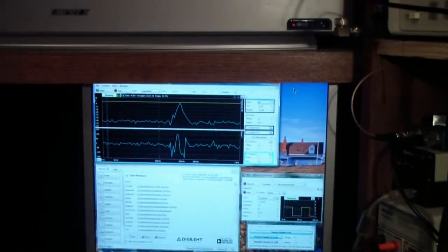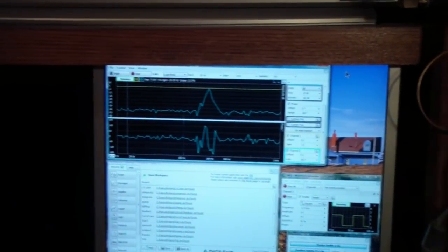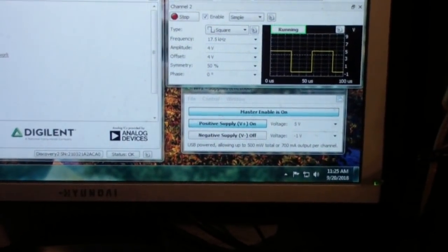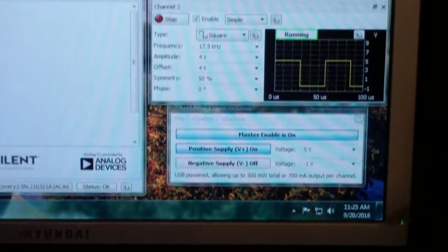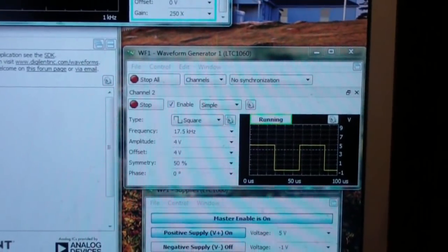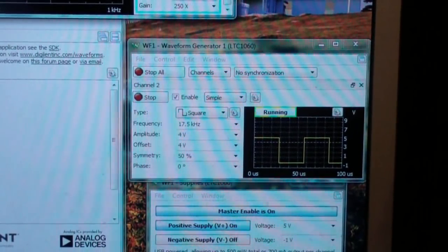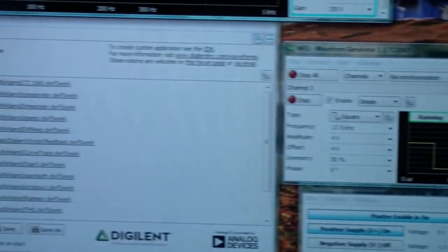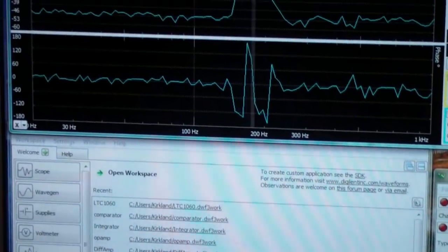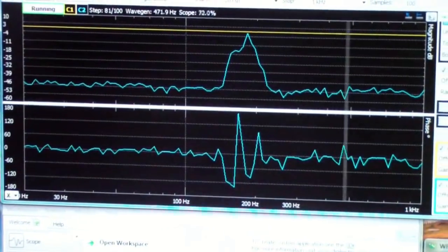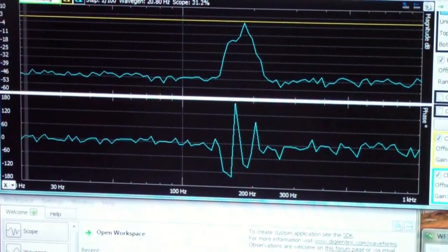Over here is the analog discovery and let me show you a little bit. I'm using the power supply down there. I'm using waveform 2 to generate the clock at 17.5 kilohertz and then here you see the network analyzer here.